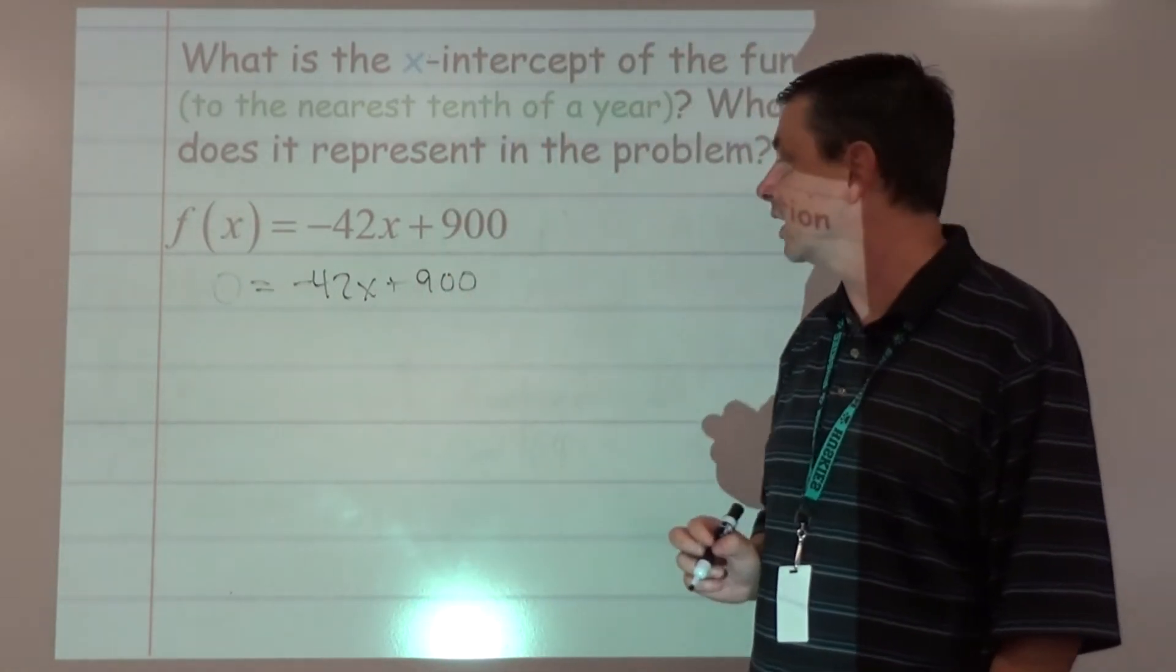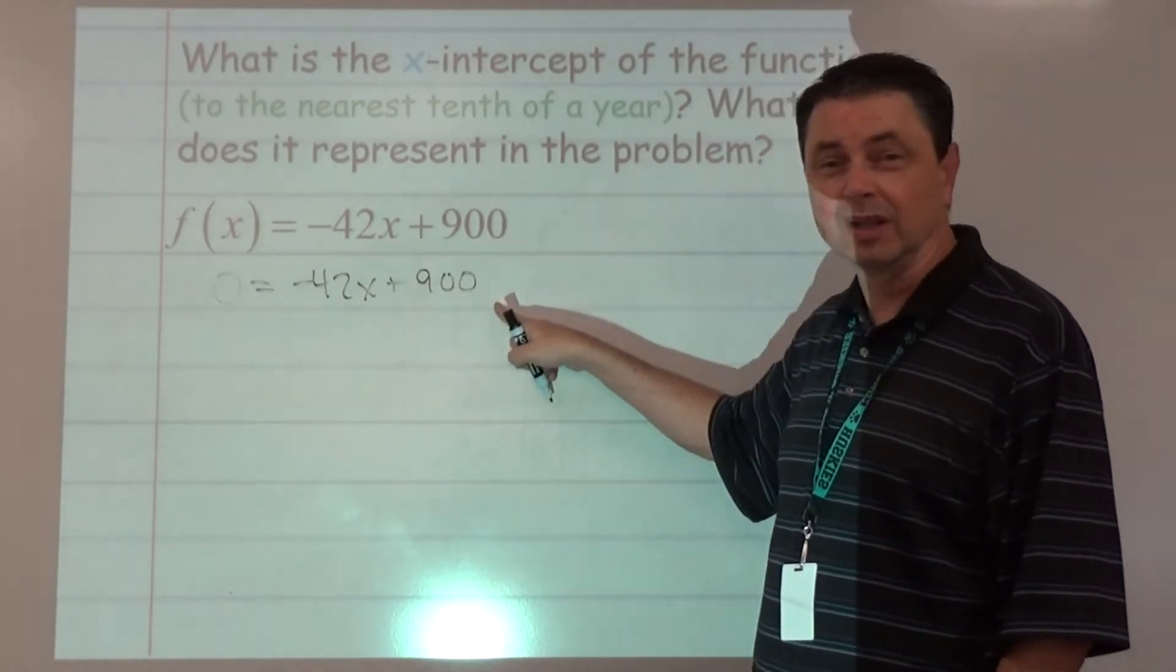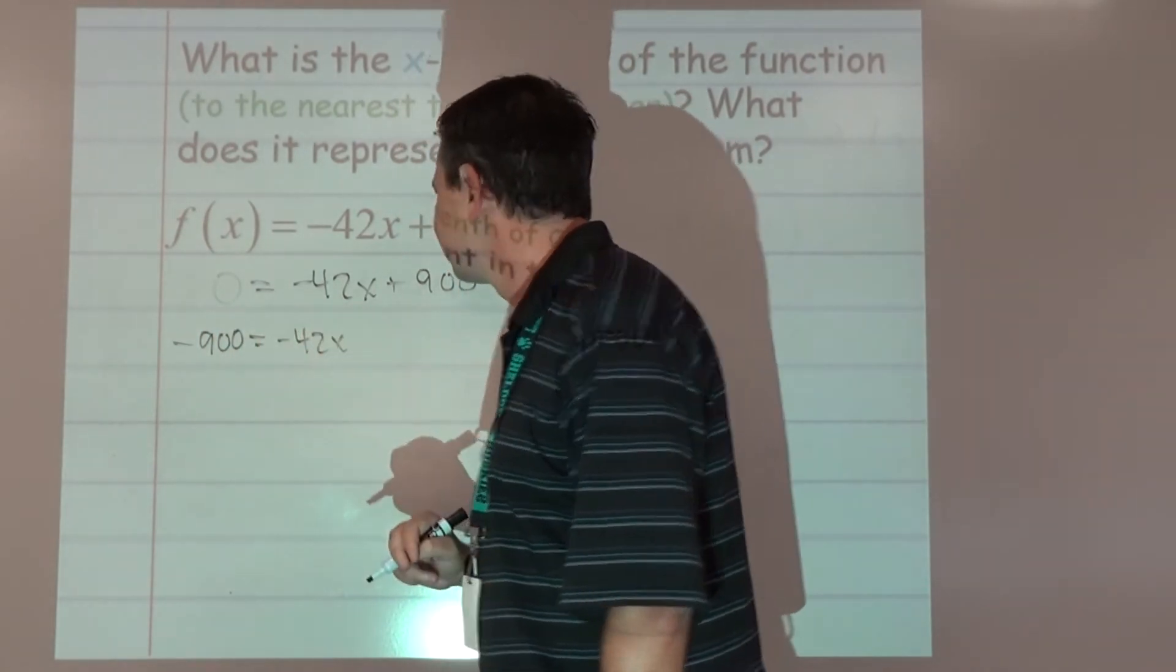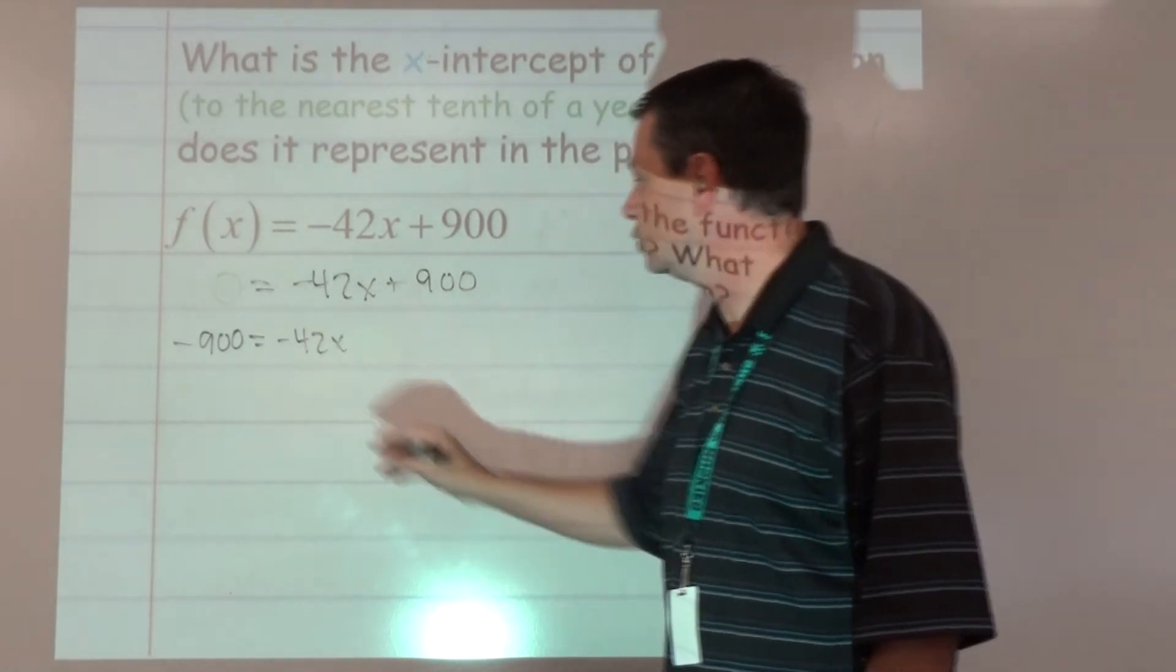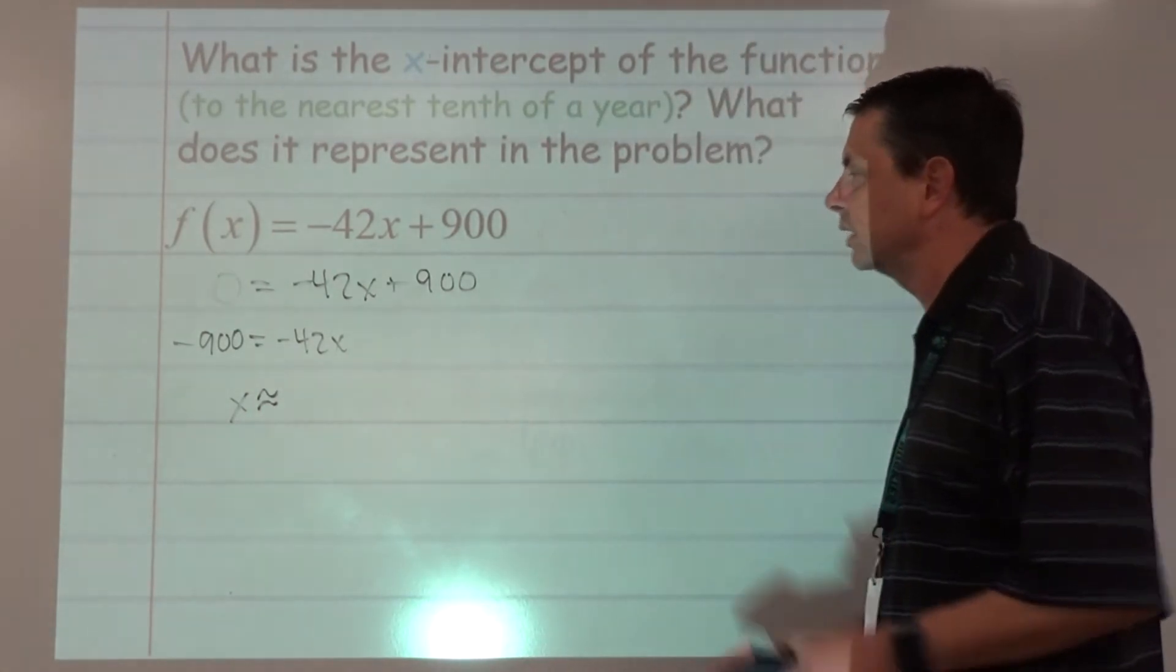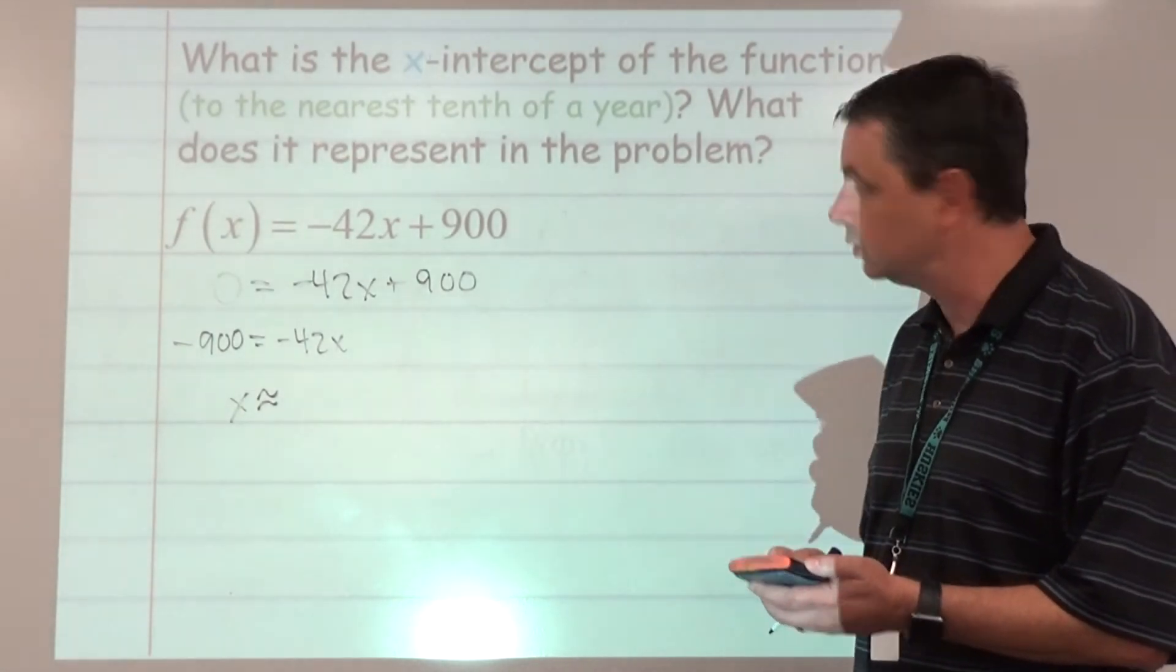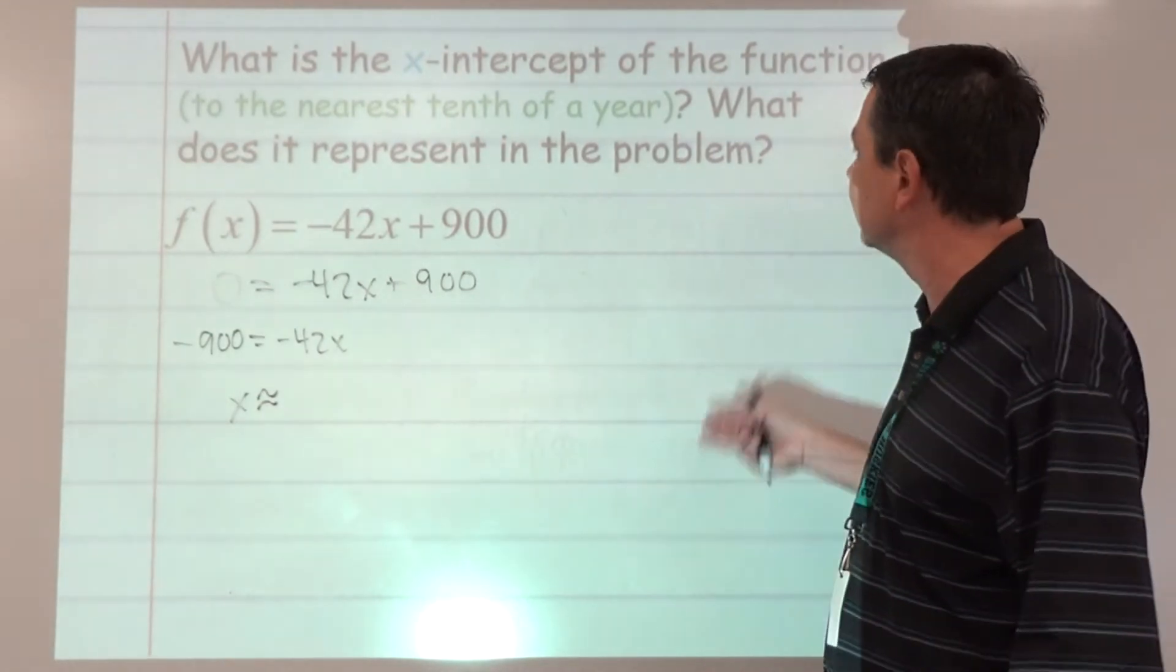We need to solve for x. If we're trying to get x by itself, let's get rid of the plus 900, so subtract 900. Divide both sides by negative 42. We're going to get x, and we're going to have to round this. x is approximately - on calculator, negative 900 divided by negative 42 says 21.42857.